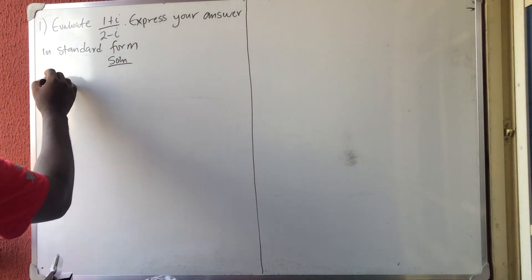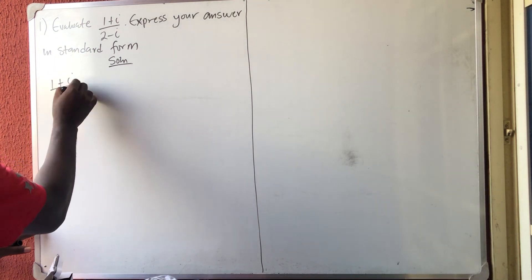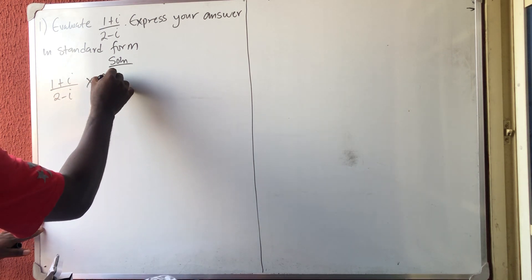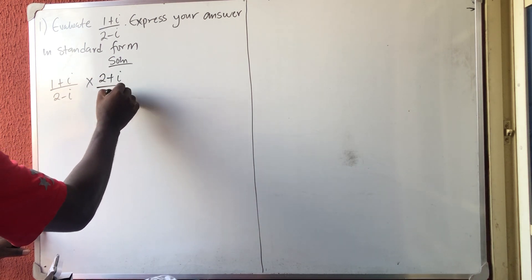What we have to do is just to rationalize. So I have 1 plus i all over 2 minus i, times the conjugate of this, which is 2 plus i all over 2 plus i.